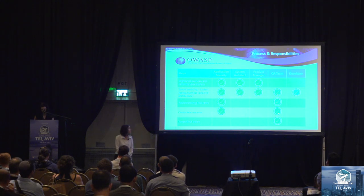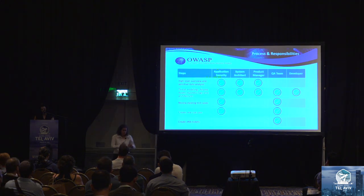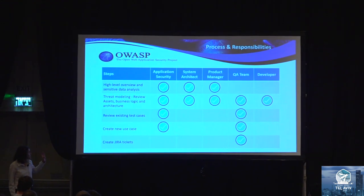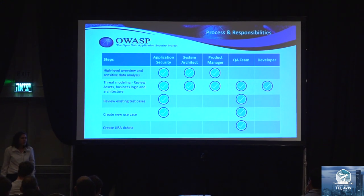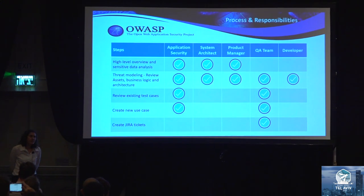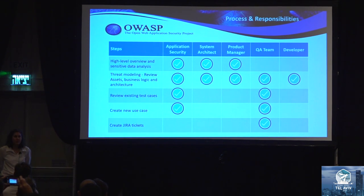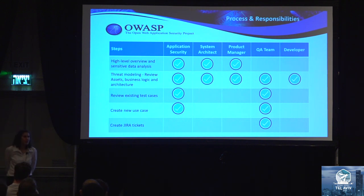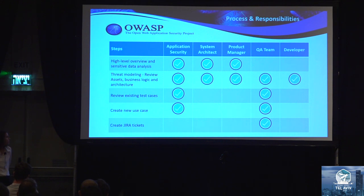This is the actual process for a system-level workflow. In the first step, the application security person works with the system architect or the product manager to review the system features, the high-level overview, and the sensitive data. If the system contains sensitive data or sensitive functionality, then there is real reason to do security testing. Otherwise, there's no point in doing security testing.